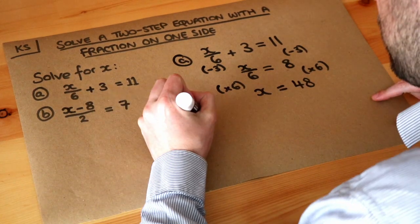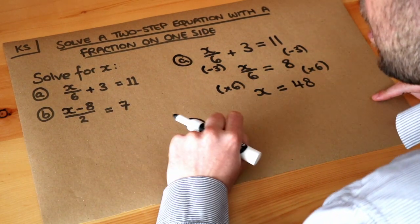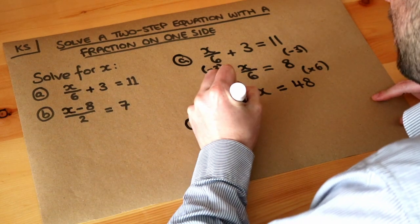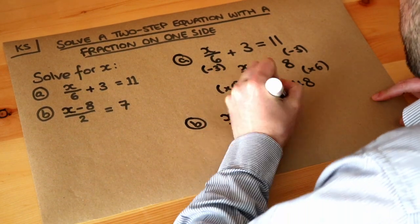Let's do the same for the second equation. You can see it looks similar but slightly different this time. So if I write it in big, x minus 8 over 2 is equal to 7.